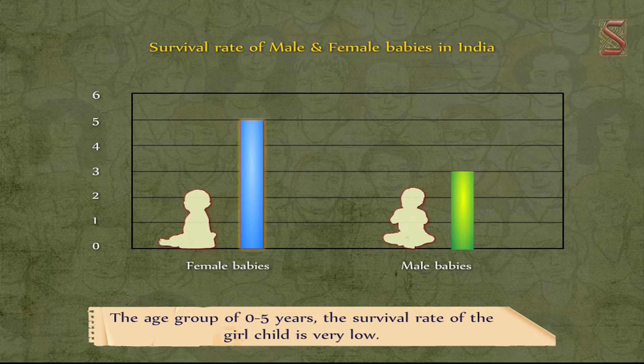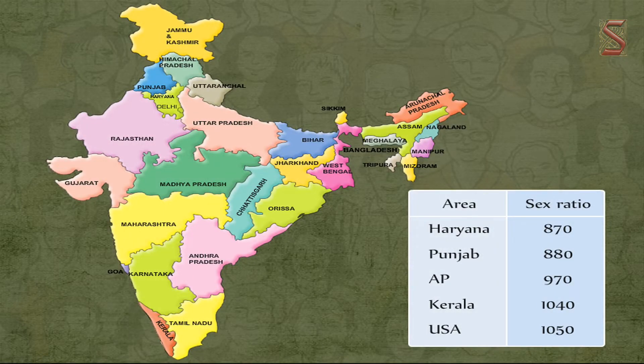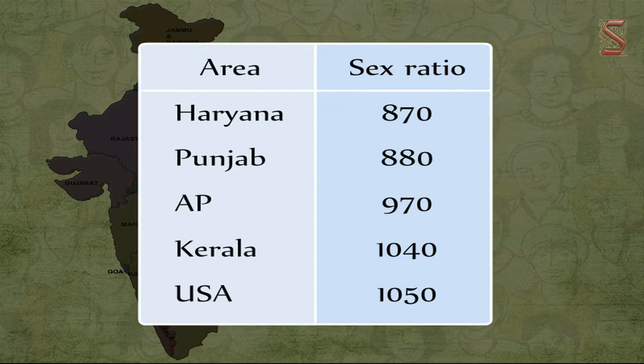We see that more female babies die than male babies, specifically in the age group of 0 to 5 years — the survival rate of the girl child is very low. Discrimination with regard to care and nutrition is one of the main reasons. In countries or societies where there is equality for women, the sex ratios are different; regions with unequal gender relations point to unequal sex ratios.